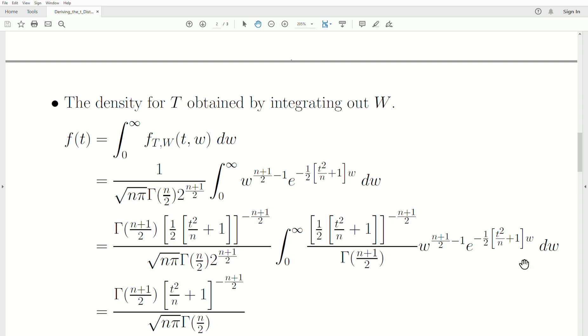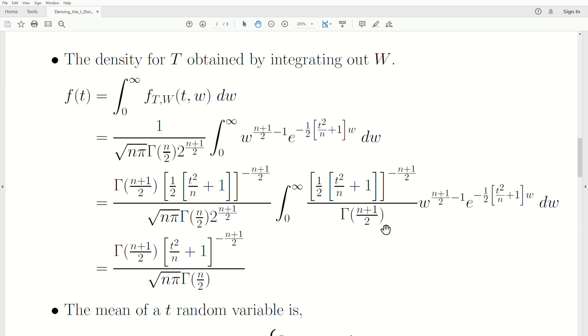But then this is a gamma distribution and it integrates to one, where this term here is beta. So this is beta raised to the, you know, this term here, which I call alpha often, this gamma of alpha, so this is one and we're left with this term here.